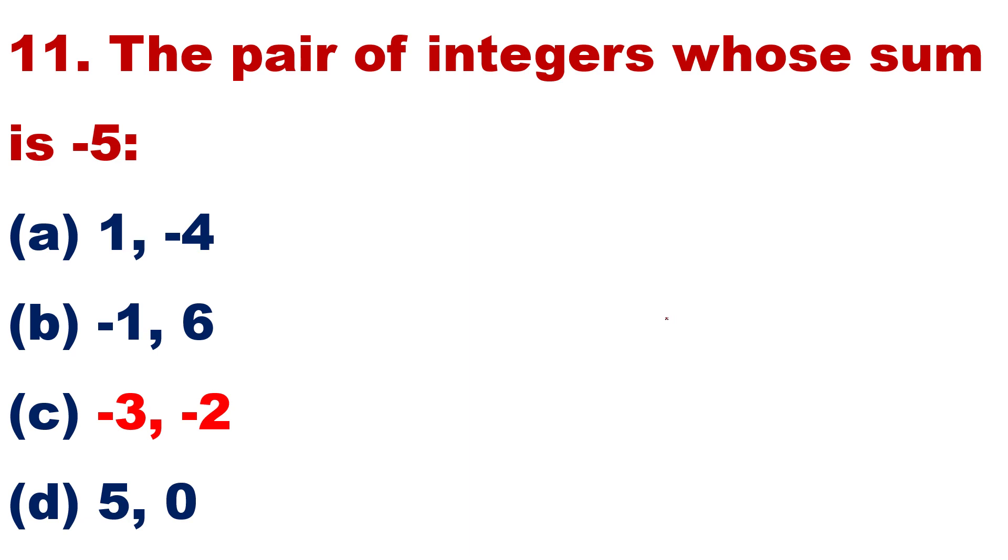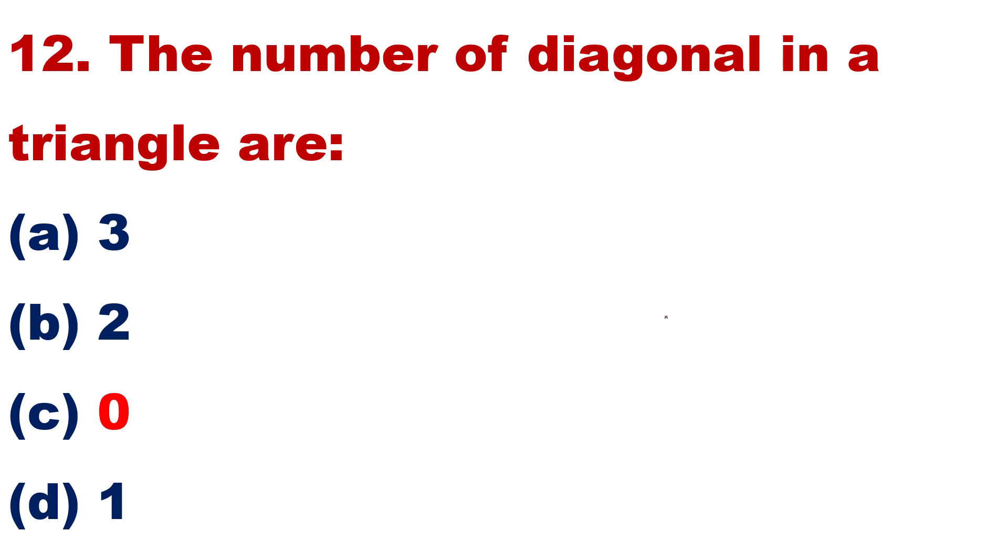The number of diagonals in a triangle are: 3, 2, 0, 1. Maybe, maybe you are thinking absolutely correct.